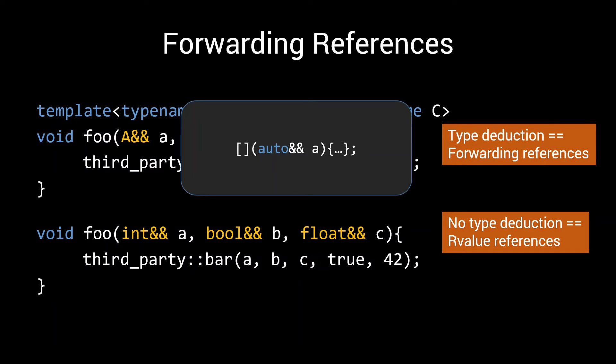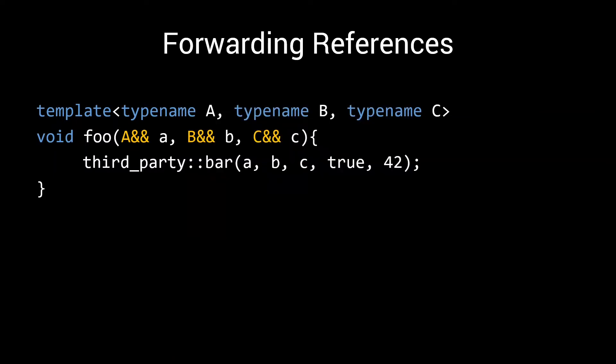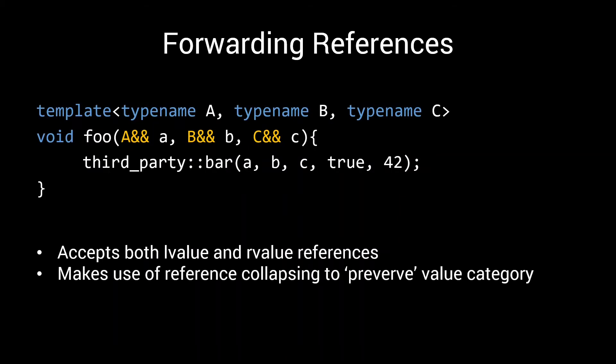Forwarding references are special, in the sense that they can bind to both l-values and r-values. And what's more, as the compiler deduces the type for forwarding reference, it uses the rules of reference collapsing, which allows forwarding references to preserve the value category of whatever you're binding them to. Let me explain how that works with an example.